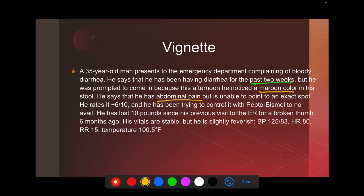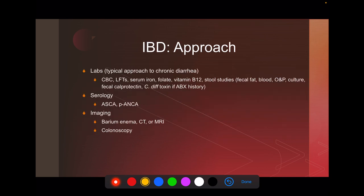He has abdominal pain — often you get cramping and bloating with diarrhea whether it's infectious or inflammatory. But the weight loss is really concerning, and he's also febrile. This picture points toward IBD. We don't know yet if it's Crohn's or ulcerative colitis, which is why we need to work the patient up. First, get labs: CBC, liver function tests, and a nutritional workup including iron, folate, and B12 — that will be important if you suspect IBD.